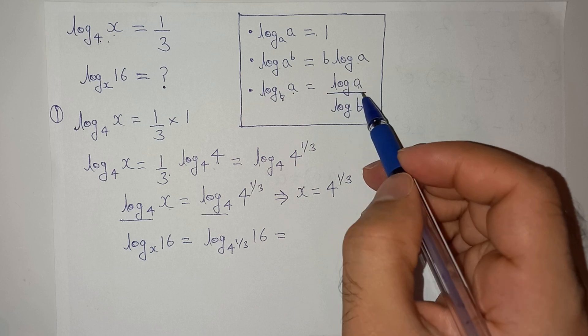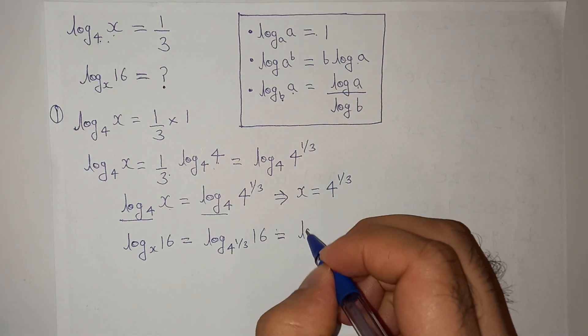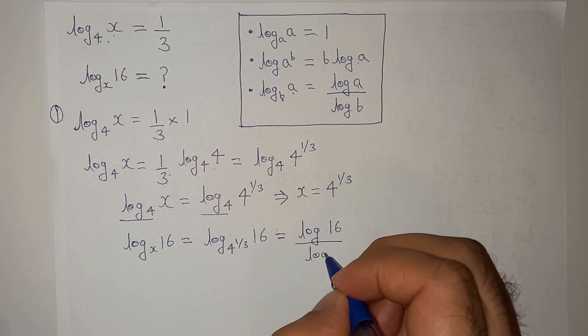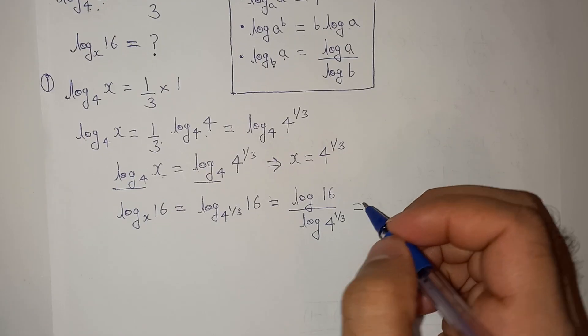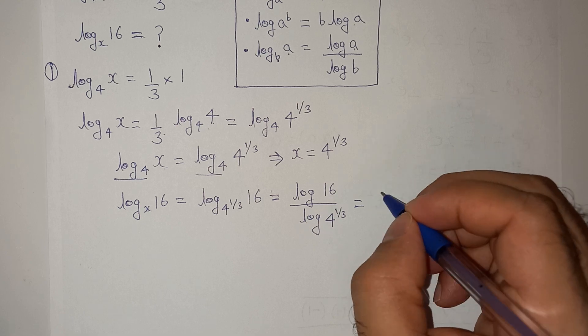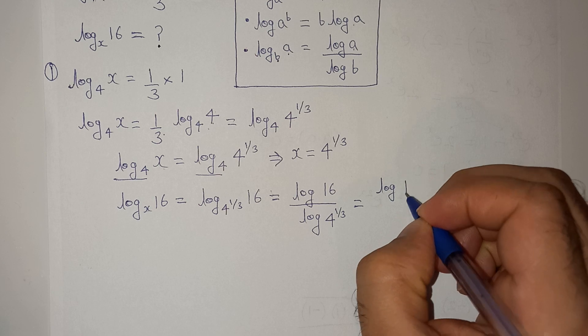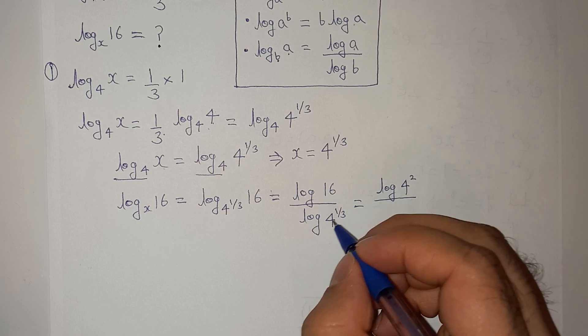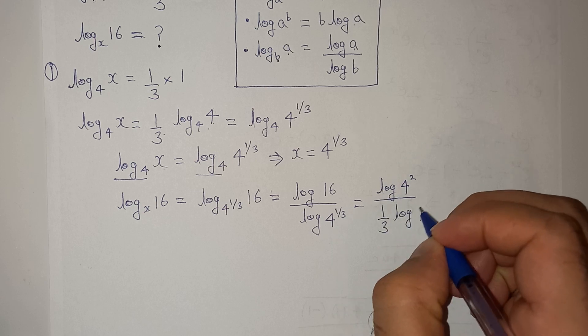Now I am going to use the change of base formula—when the base is b and the number is a, it will be log(a) divided by log(b). So this will be log(16) divided by log(4^(1/3)). This can be written as log(4²), and this will be 1/3·log(4).